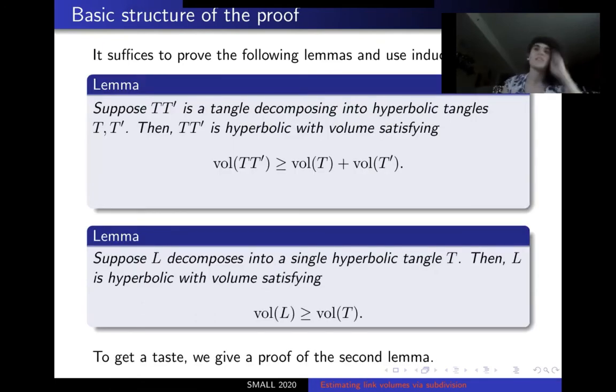So I'll give a sketch of a proof. What we do essentially is that first we say that you can conglomerate two adjacent hyperbolic tangles and it will give you a hyperbolic tangle. Its volume will be lower bounded by the sums of the volumes. Then once you've done that enough times that you have only one left, you have essentially the same theorem, but for a decomposition into a single hyperbolic tangle. And we'll give a proof of this second lemma, although the first is essentially the same. They're both proofed by pictures.